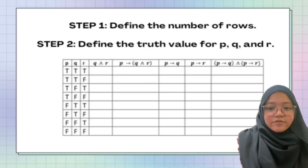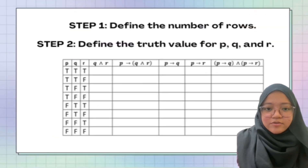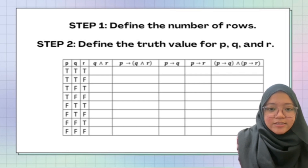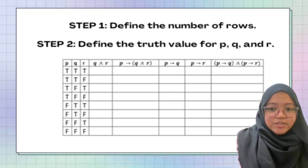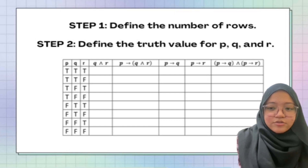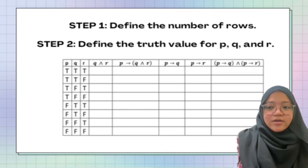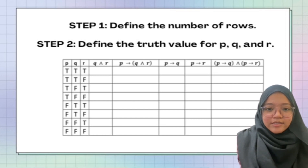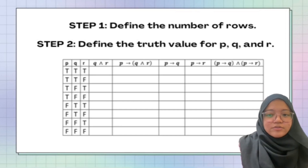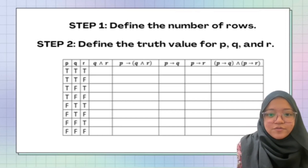Step one is to define the number of rows by applying 2 to the power of n, where n is the number of variables. In this question, our variables are P, Q, and R, so 2³ = 8. The number of rows is 8. Step two is to define the truth values for P, Q, and R.